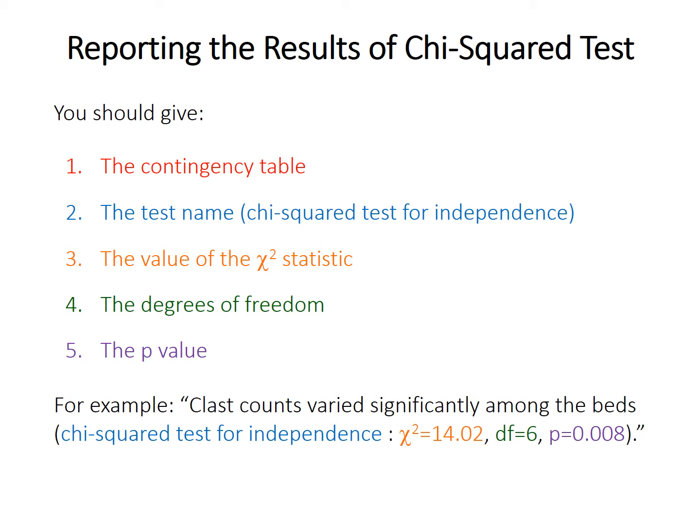When reporting results, you should give the contingency table itself, the test name (chi-squared test for independence), the value of the chi-squared statistic, the degrees of freedom, and the p-value. You can phrase your results in terms of a significant difference or a lack of significant difference in the counts or abundances of the categories among the samples.